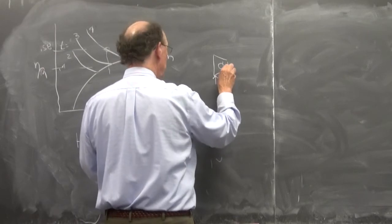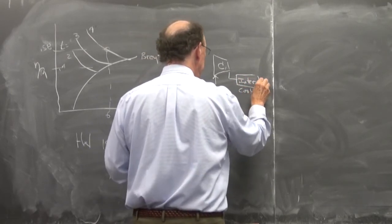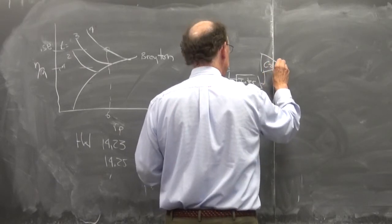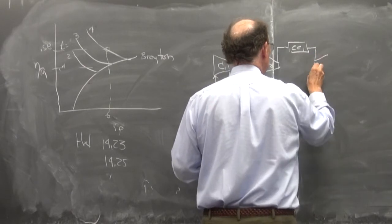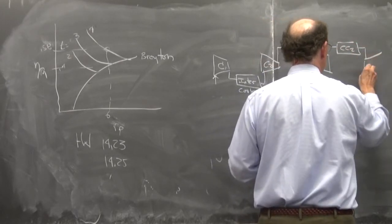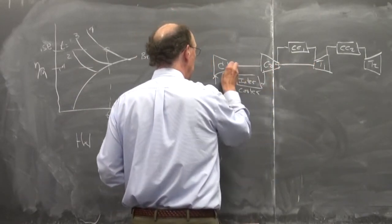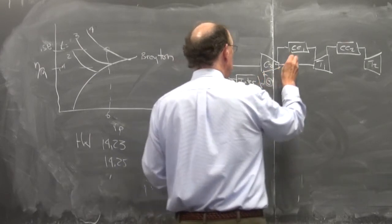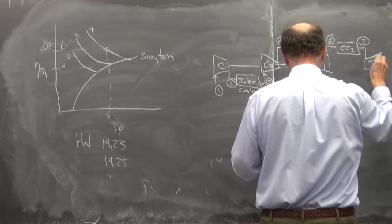So it comes into the compressor C1, goes out into an intercooler, out of the intercooler, into compressor C2, out of this, into combustion chamber 1, CC1, into turbine 1, out of turbine 1, into combustion chamber 2, out of combustion chamber 2, into turbine 2. Now in this case, this turbine is going to be driving both compressors. And let's look at the numbering here. 1, 2, 3, 4, 5, 6, 7, 8.